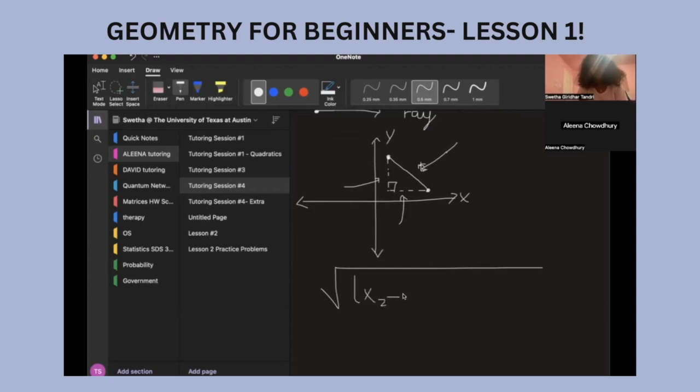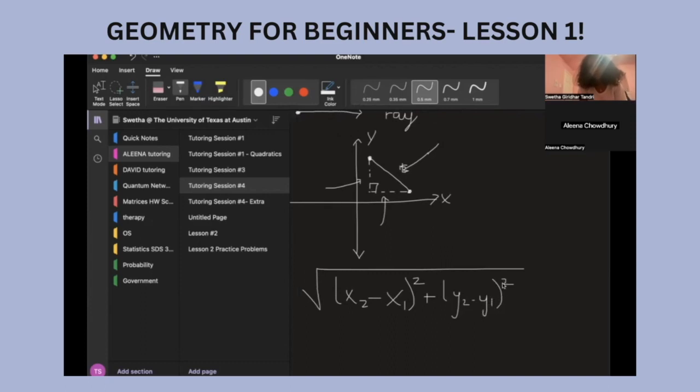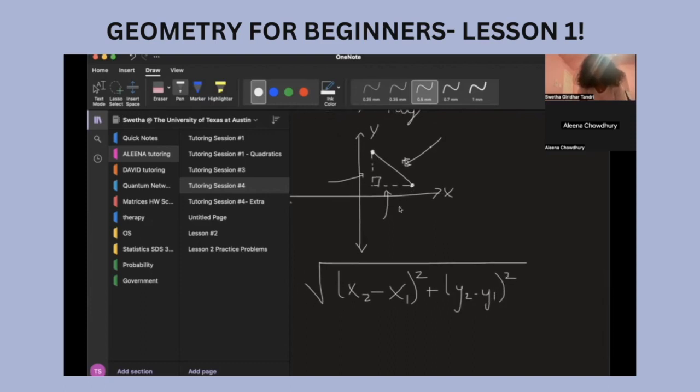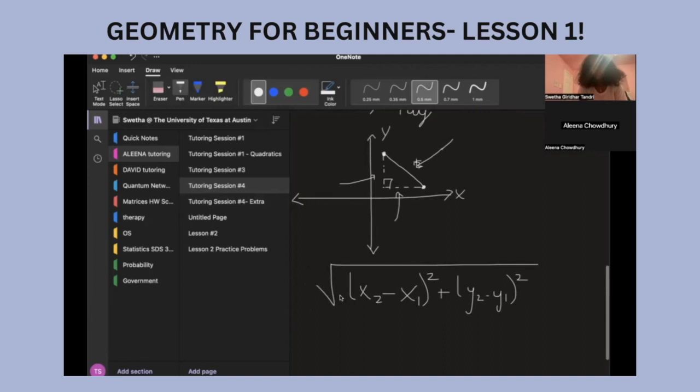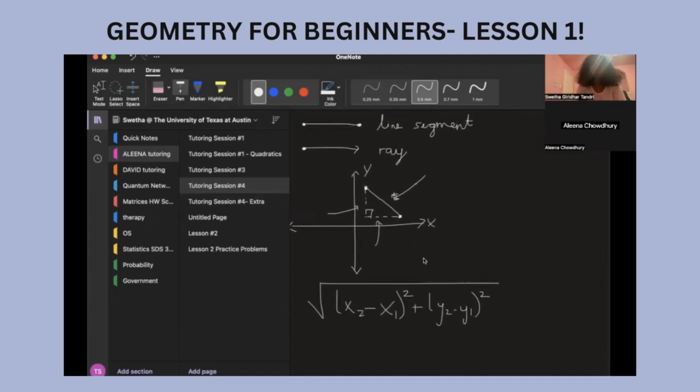And we need to find the differences in the values of the X's and Y's. So then we do X2 minus X1 squared plus Y2 minus Y1 squared. So you square the change in X and then you add it to the square of the change in Y. Y2 minus Y1 and then after that, you would take the square root of it.